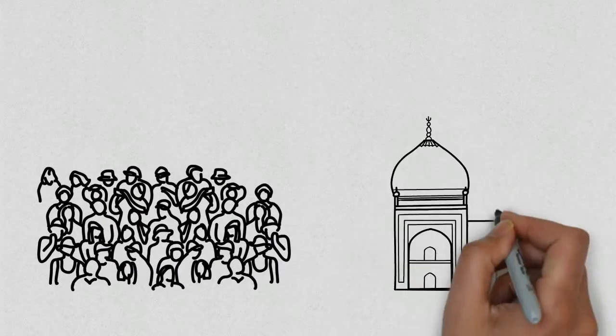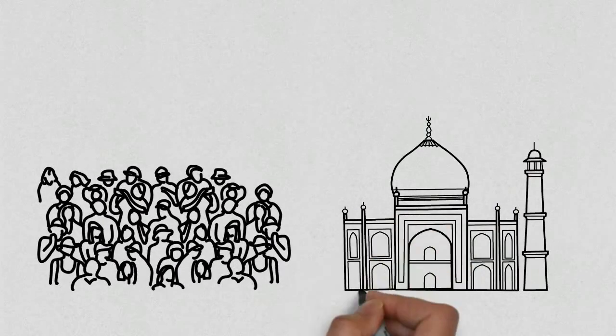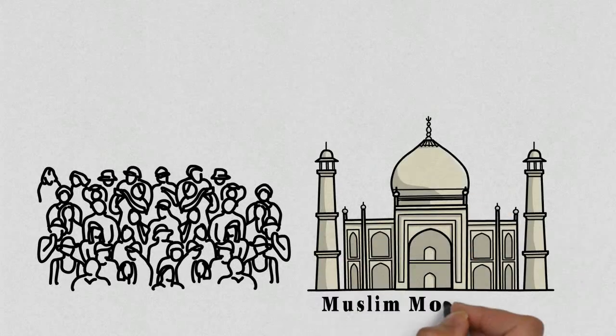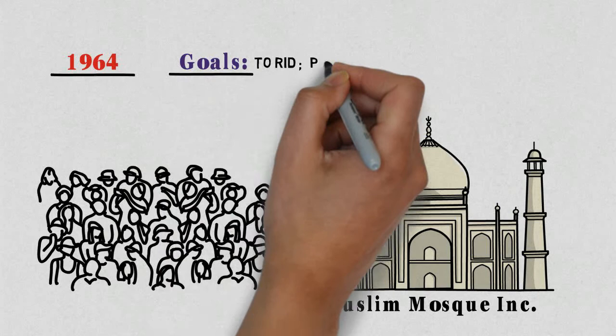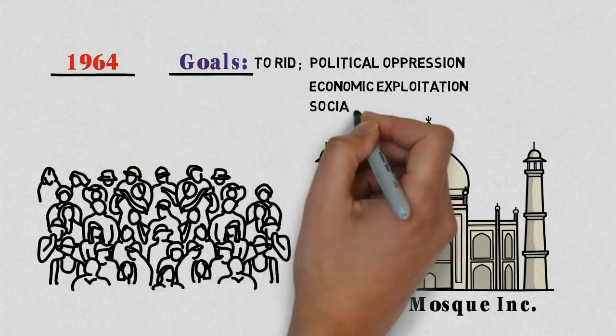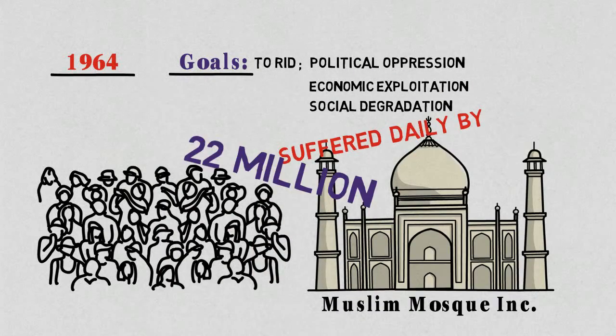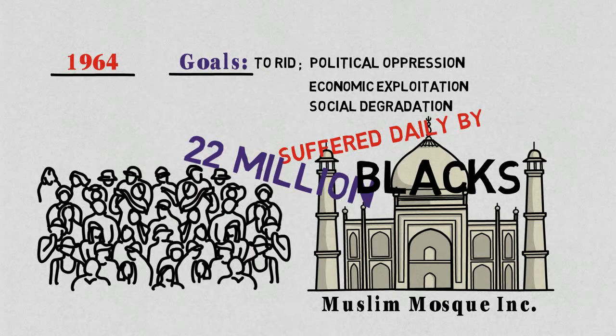So in 1964 Malcolm founded the Muslim Mosque Inc and his new Organization of Afro-Americans which accepted blacks from all faiths. Its goal was to rid of political oppression, the economic exploitation, and the social degradation suffered daily by 22 million black people in America.